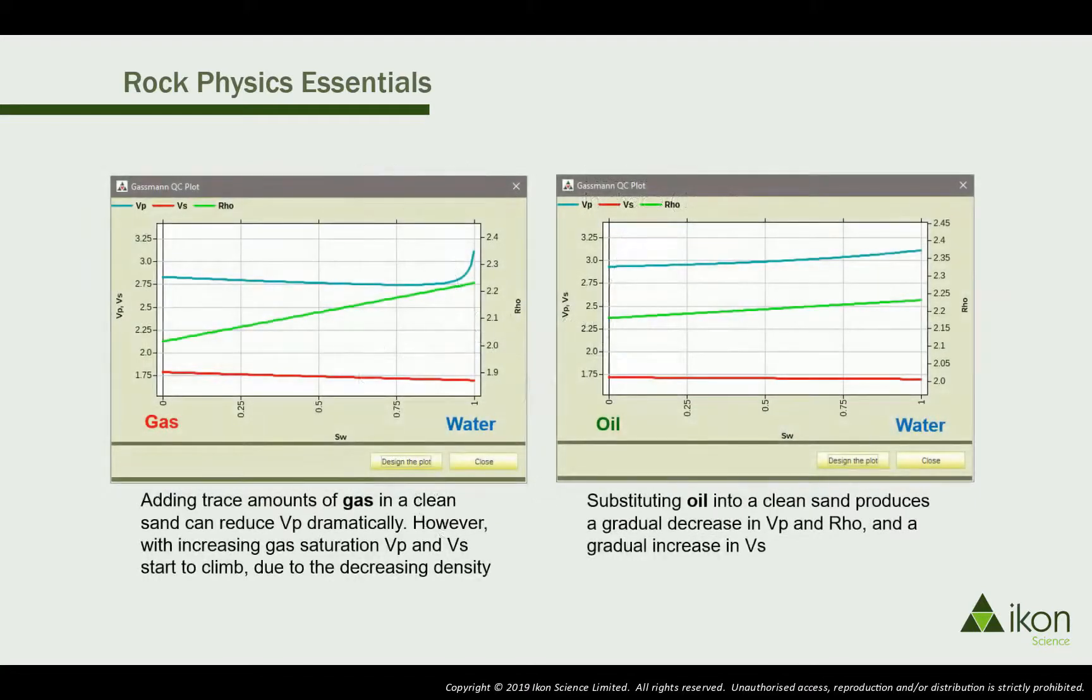This explains the gas effect seen here. When gas is introduced into the pore spaces of a rock, the rock becomes much more compressible, reducing K and hence VP. As fluids and gases have no shear strength, the shear modulus is unchanged.